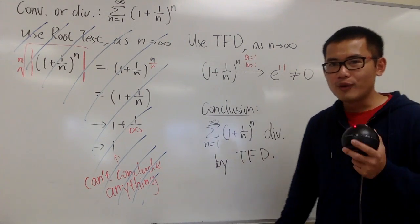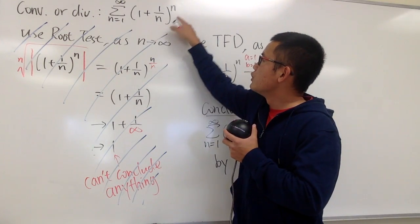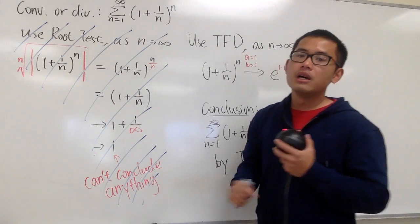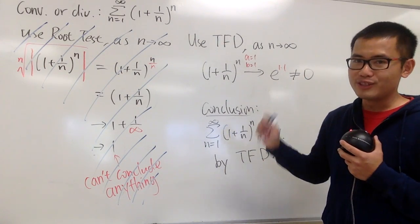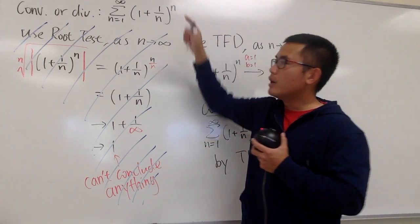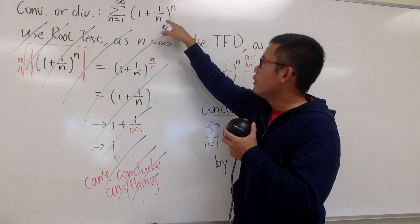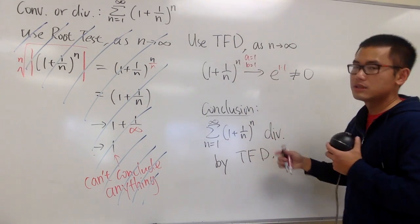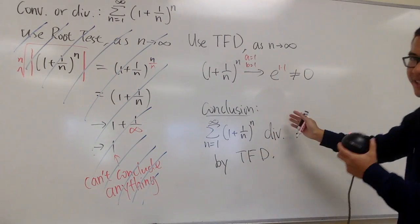And just a small remark, hopefully you guys have seen the previous video. Earlier, if we had this raised to the n squared power, in fact, we could not use the test for divergence. You can try it. If it was n squared, you really had to use the root test for it, but in this question, we only have the nth power, the test for divergence works extremely nicely. And, as usual, that's it.